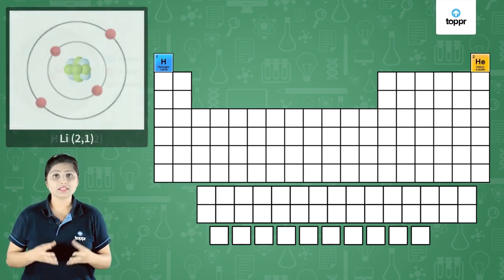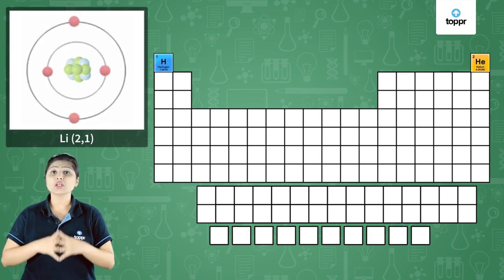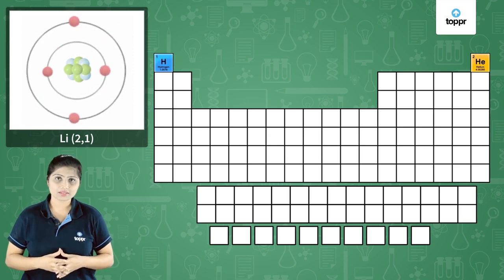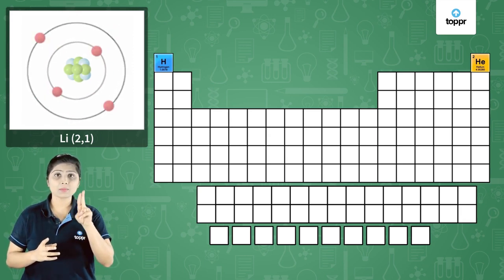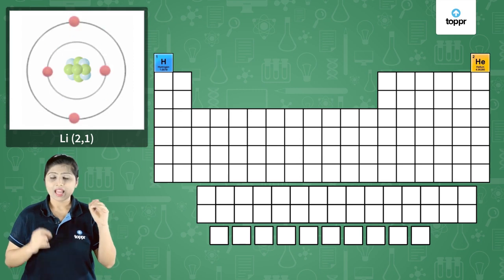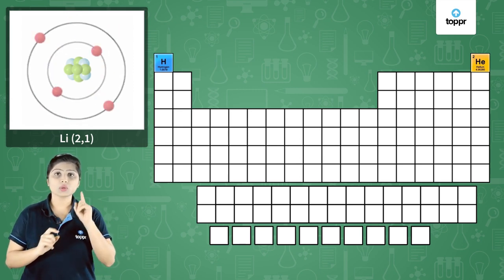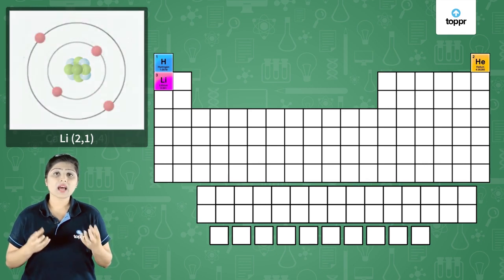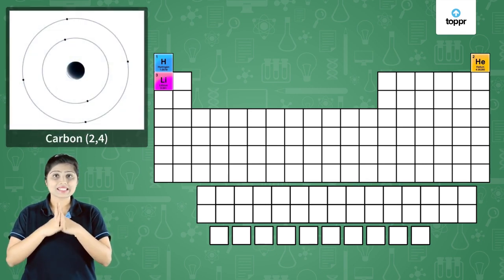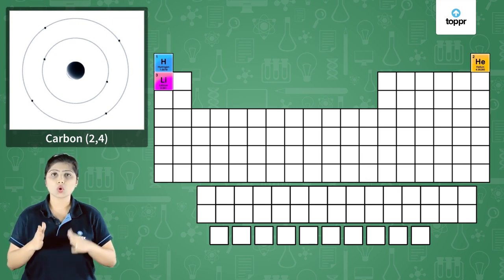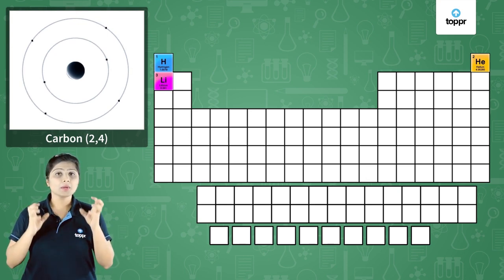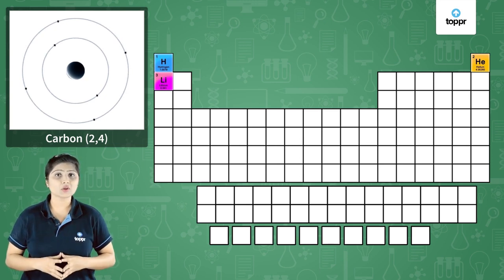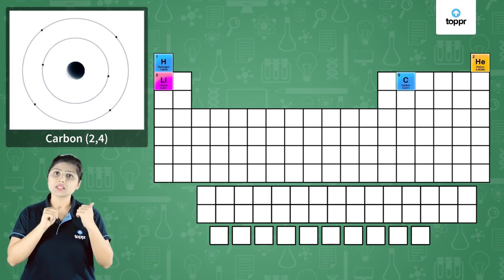Then we have lithium. Lithium is the third element. Its electronic configuration becomes 2, 1 because it has 3 electrons. Because it has 2 shells, it will belong to the second period. And because its valence electron is only 1, it will belong to the first group. Suppose we have carbon — carbon is the 6th element, so its electronic configuration is 2, 4. Because it has 2 shells, it will belong to period 2. And it has 4 valence electrons, so it will belong to the 14th column.